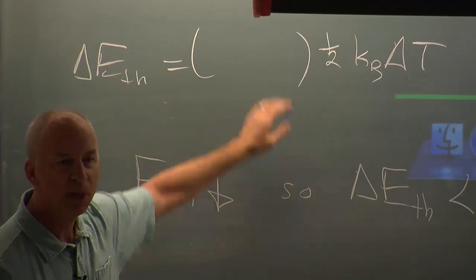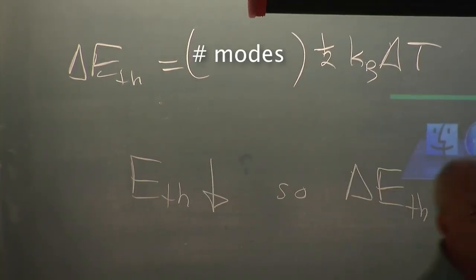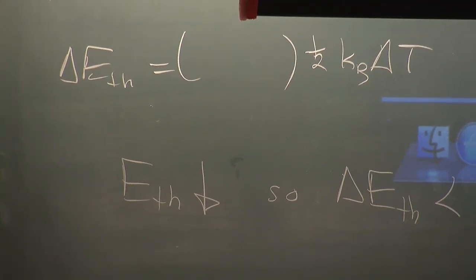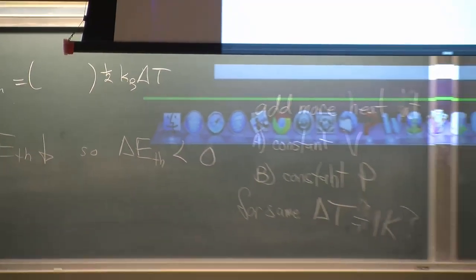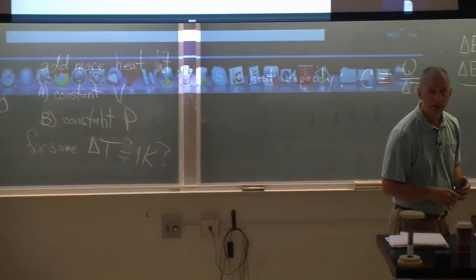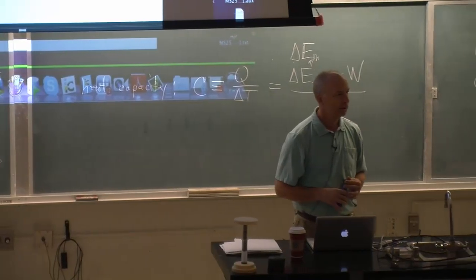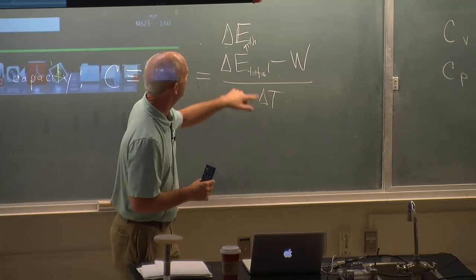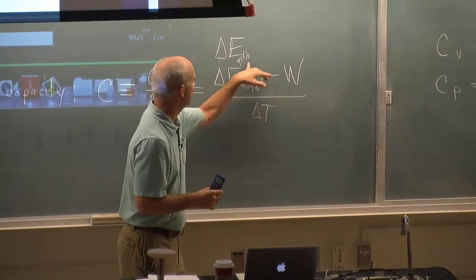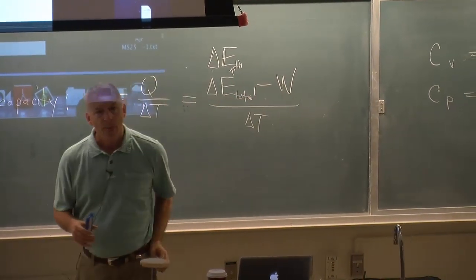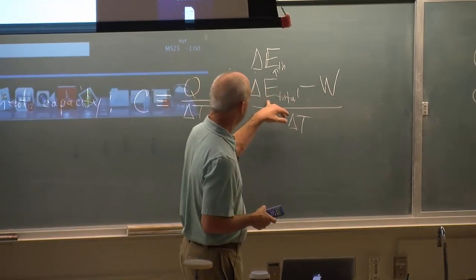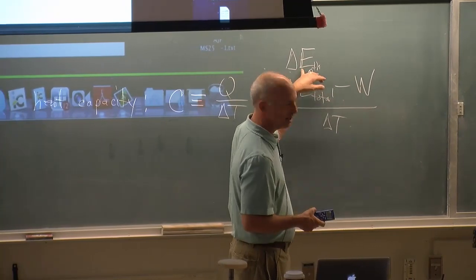And some of that stuff is one half KB and other constants. If the delta T's are the same, can the delta E thermals be different? This has number of modes in it. The number of modes was the same whether it was a volume change or a pressure change. We have the same number of molecules, same number of modes, everything's the same. So delta E thermal is the same.